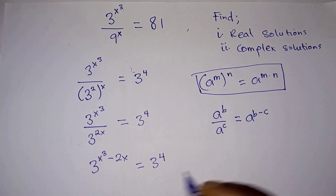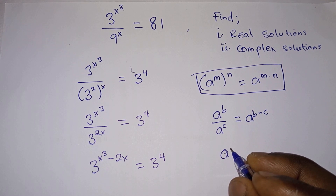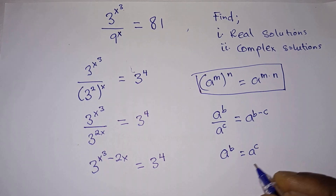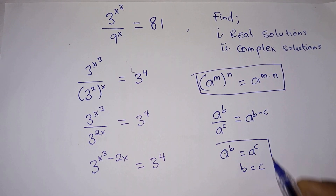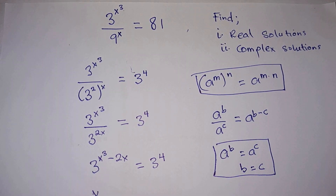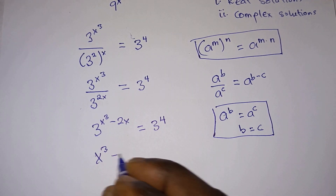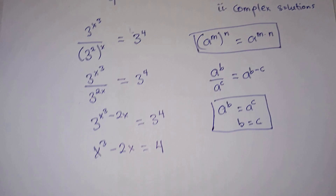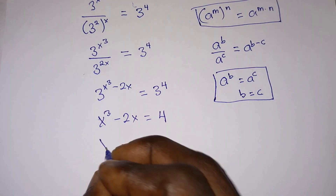The bases on either side of the equation are the same, so we apply the rule: if a to the power b equals a to the power c, then b equals c. From this equation we have x cubed minus 2x is equal to 4.